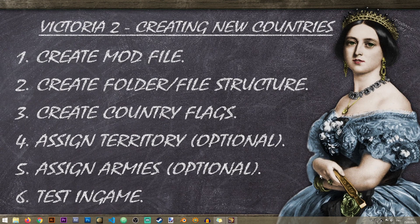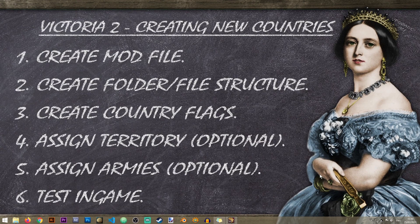There are six main steps in creating a new country in Victoria 2. First, you will need to create a mod file - I have a separate video for that. Second, we create our folder and file structure. Third, we create our country flags, which are required for the country to work. Fourth, we assign territory to our country, which is optional if you want a releasable nation. Fifth, we assign armies to our new nation, which is also optional. And the last step is to test everything in the game.